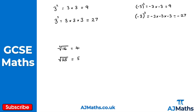We can also take the cube root of a number. The cube root is denoted with the same symbol but with a 3, telling us we're taking the cube root. For the cube root of 8, we're asking what number times by itself and itself again gives 8 — that's 2. For the cube root of 64, that would be 4, because 4 times 4 is 16, and 16 times 4 is 64.